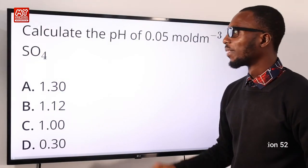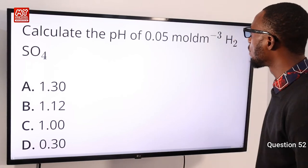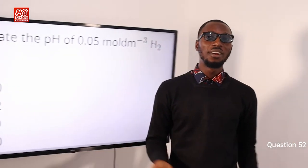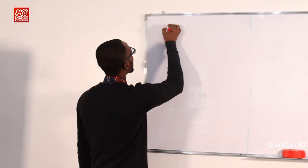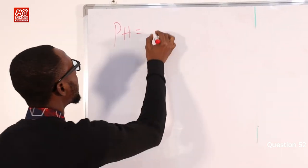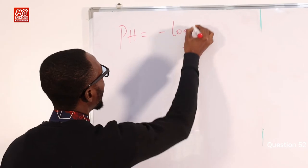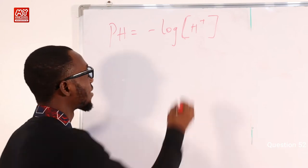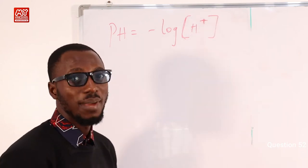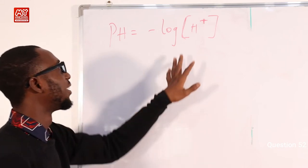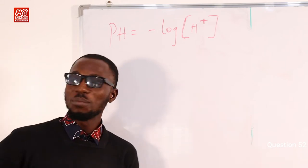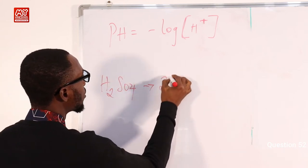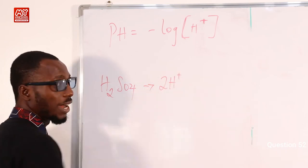Question 52: Calculate the pH of 0.05 mol/dm³ H₂SO₄. pH = −log[H⁺]. When H₂SO₄ dissociates, it gives 2 moles of H⁺ ions plus SO₄²⁻. So [H⁺] = 2 × 0.05 = 0.1 mol/dm³.